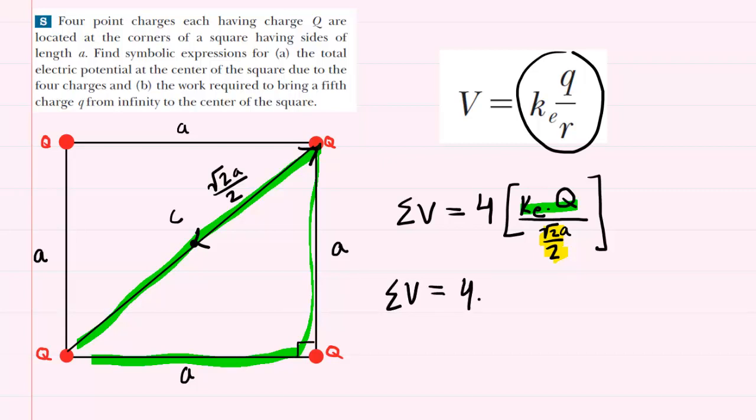Now, keep-change-flip means keep the numerator the same, so we'll have k sub e times capital Q, change the division to multiplication, and then flip that fraction highlighted in yellow. So you would have 2 all over radical 2A.